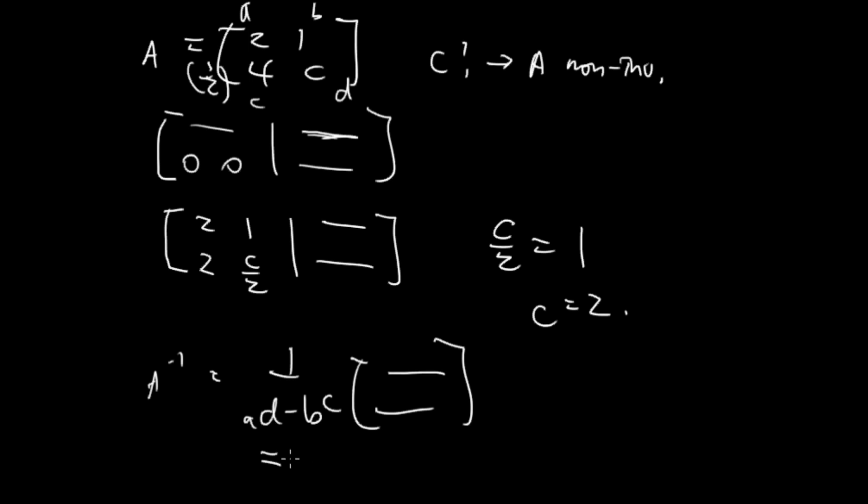So AD is 2 times C, and BC is 4. So if 2C minus 4 equals zero, then A is non-invertible.